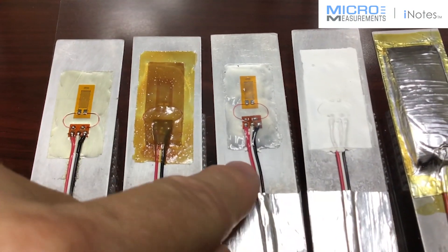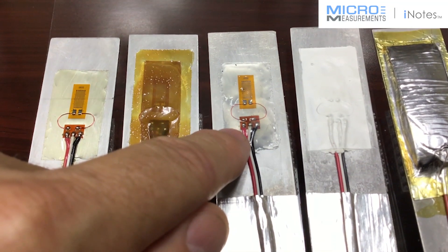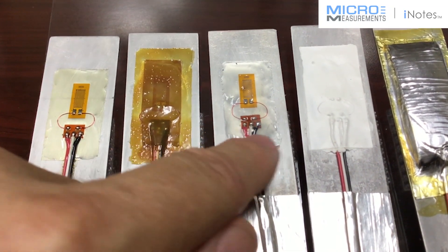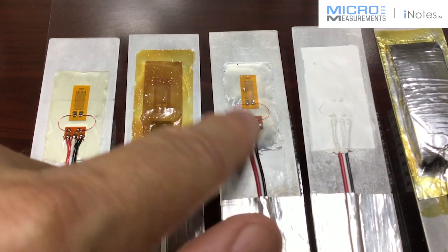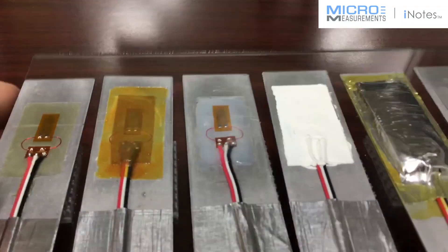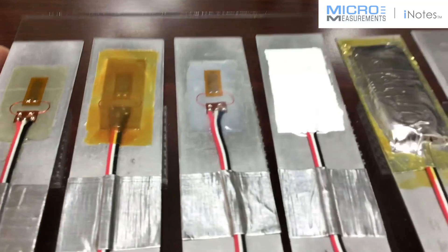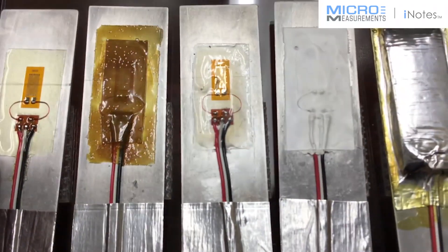The next one here, the third one over, this is our M-Coat C. This is a Dow Corning product, 3140 RTV that we add some solvent to so you can brush it on with a brush cap applicator. This goes on pretty thin since it's got the solvents in it.